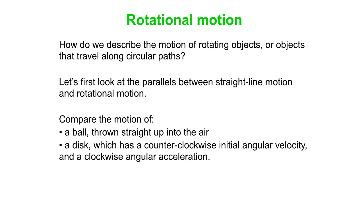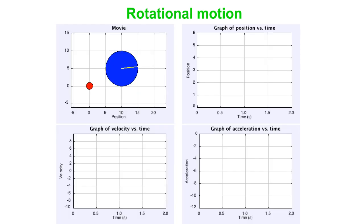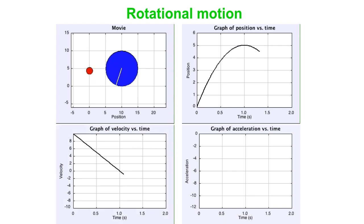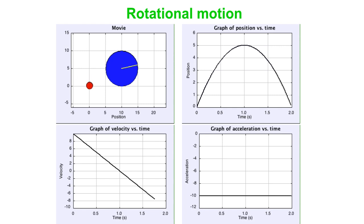Which motion do the graphs in the simulation correspond to? We'll see a set of graphs. Here we go — we'll see the motion first. You can see the ball goes up and down, and the disc goes part way around and then back. If we plot the position graph, we get a lovely parabola. If we plot also the velocity graph, we get a straight line sloping downward. With position, velocity, and acceleration, you can predict what's on the acceleration graph — a horizontal line around minus 10.